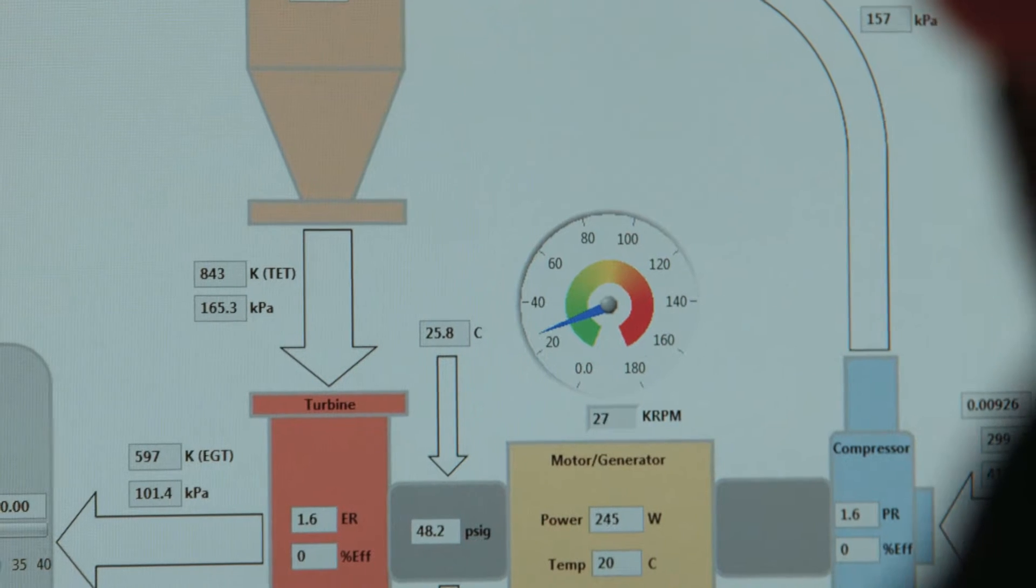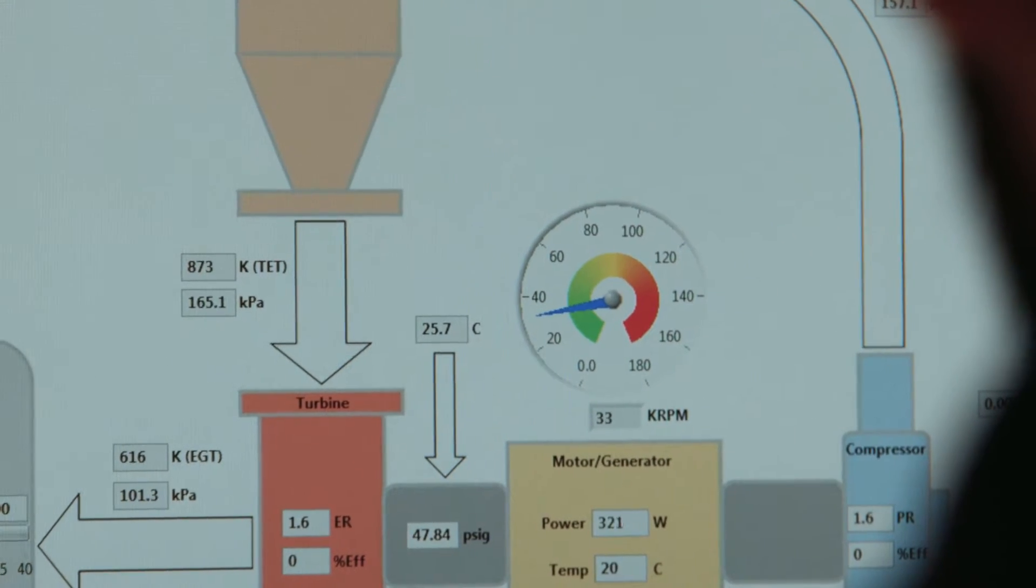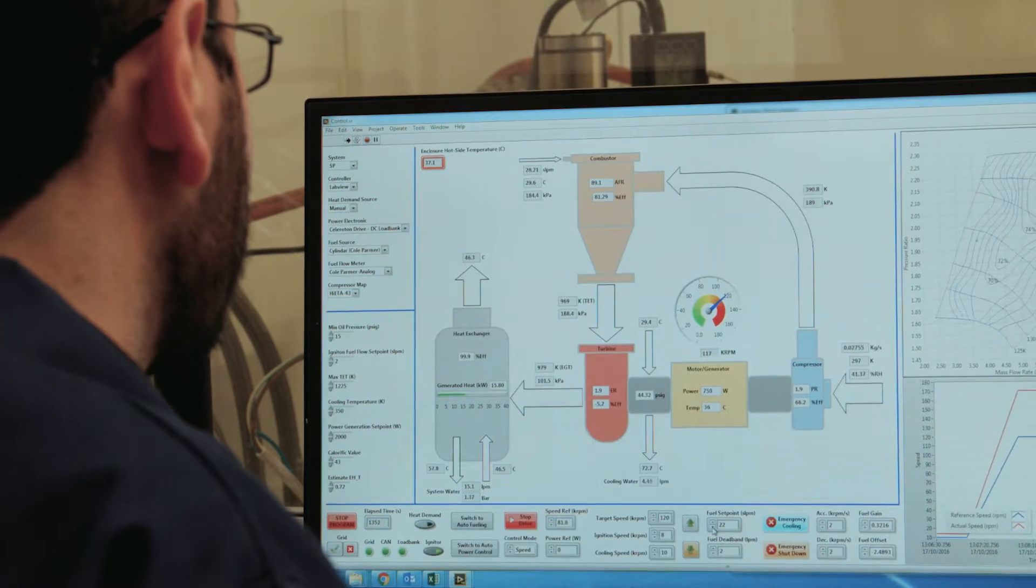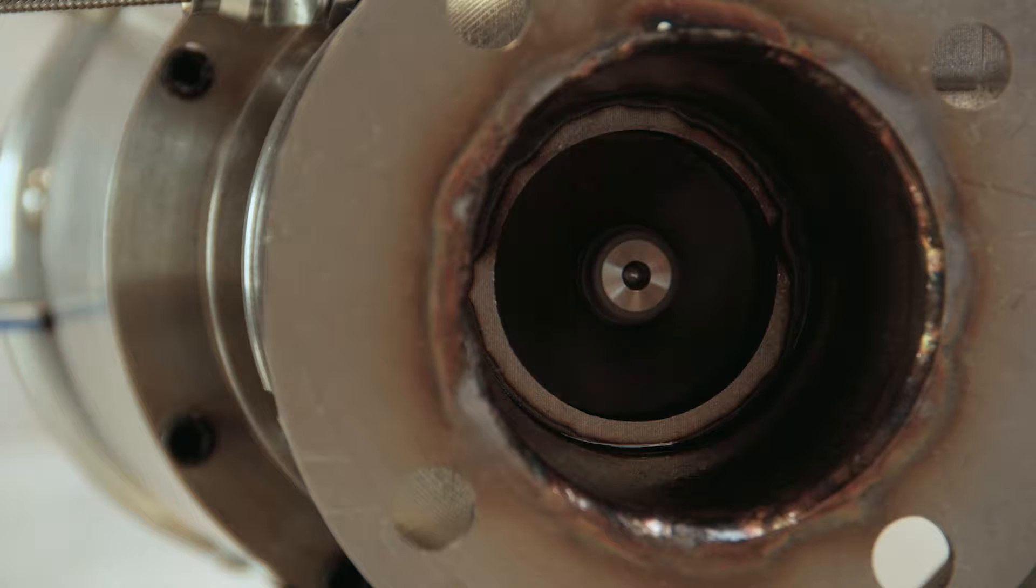Every household can save about two tonnes of CO2 per year. And imagine, we've got 24 million households just in the UK. On top of it all, they get to use the economical benefits of using this system, because they generate their own electricity.